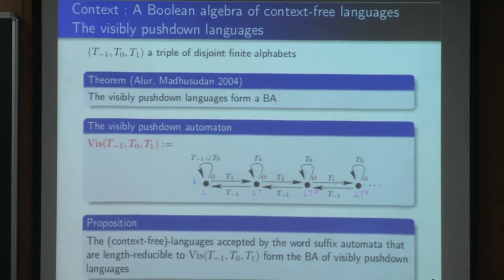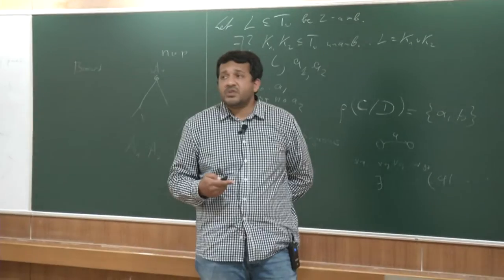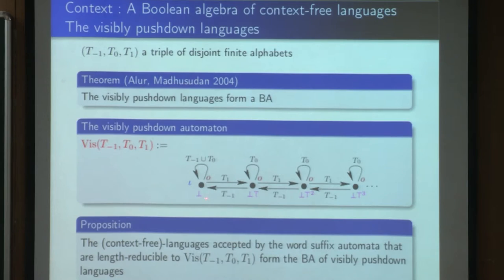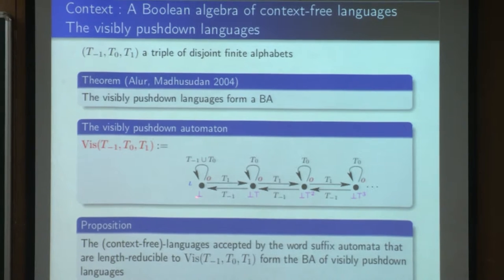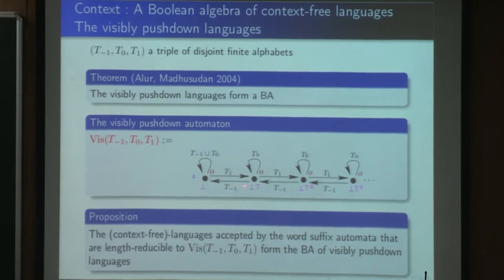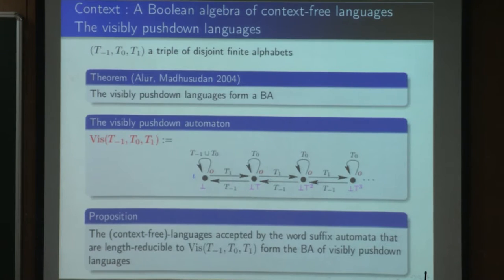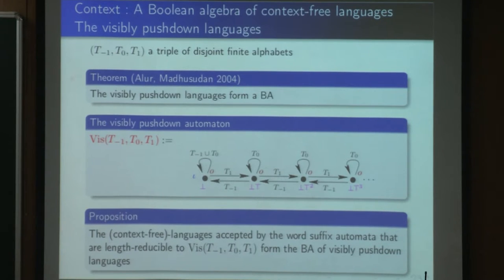A well-known Boolean algebra of context-free languages was defined by Alur and Madhusudan as visibly pushdown languages. This Boolean algebra can be characterized in terms of automata. We start from a triple of disjoint alphabets and consider the visibly pushdown automaton. Any letter in T1 increases the stack by one, any letter in T-1 decreases the stack by one, and any letter in T0 doesn't affect the length of the stack. The context-free languages accepted by word suffix automata that are length-reducible to this visibly pushdown automaton form exactly the Boolean algebra of visibly pushdown languages.